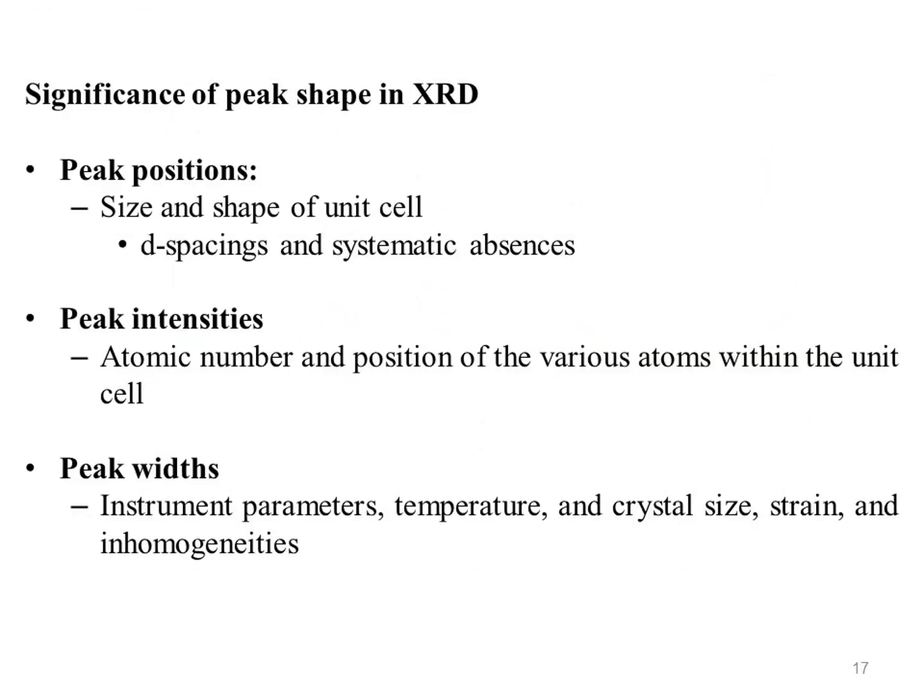The significance of peak shape in XRD: peak position is determined by the size and shape of the unit cell, meaning D-spacing and systematic absences. Peak intensity is determined by the atomic number and positions of various atoms within the unit cell. Peak width is determined by instrument parameters, temperature, crystal size, strain, and inhomogeneities.